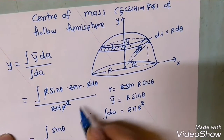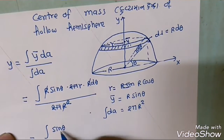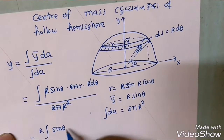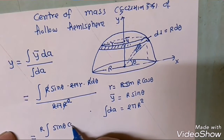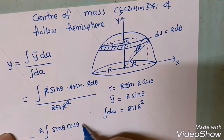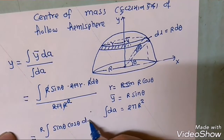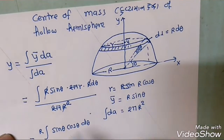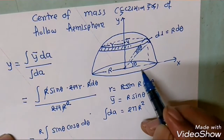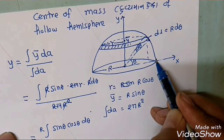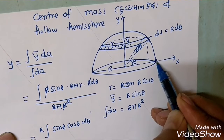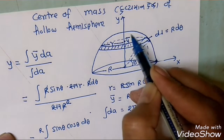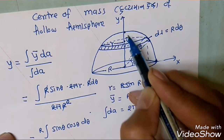sin theta into r, and r is r cos theta, and cos theta into d theta. What is the limit? The element of theta is 0 and the element of theta is pi by 2.